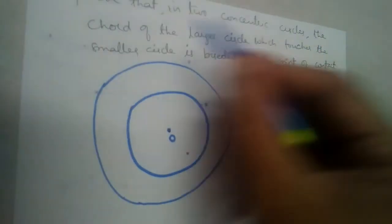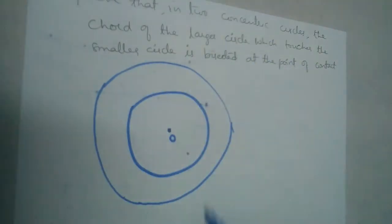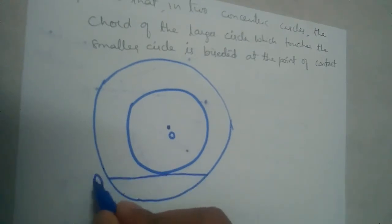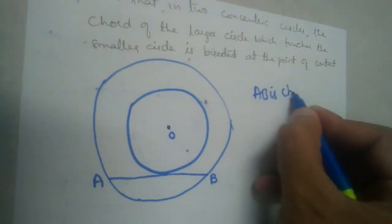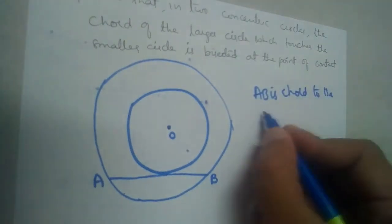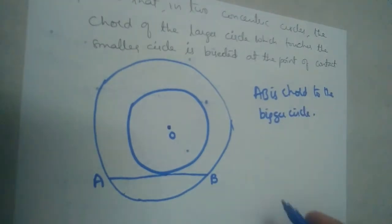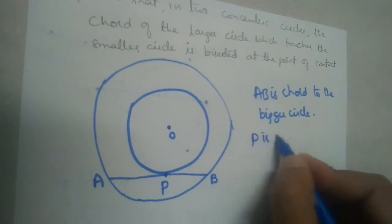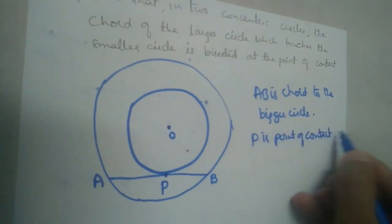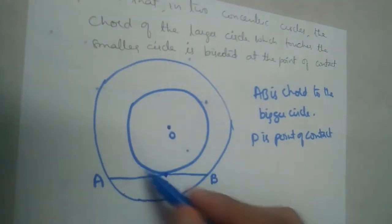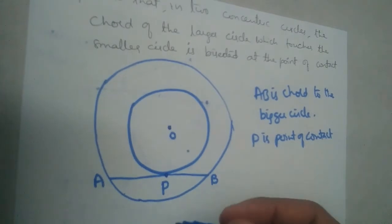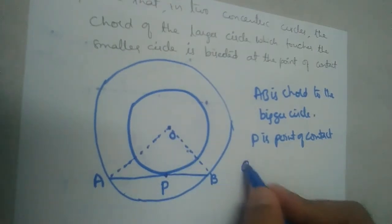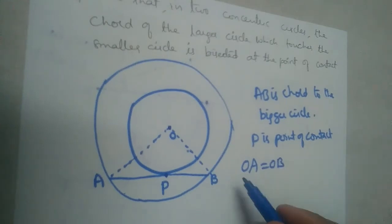The chord of the larger circle which touches the smaller circle — so chord AB is a chord to the bigger circle, and this chord is just touching the smaller circle. Let P be the point of contact. That means AB is a tangent to the smaller circle.